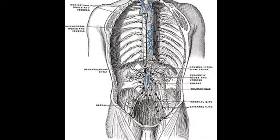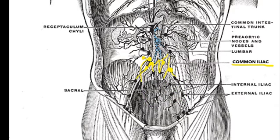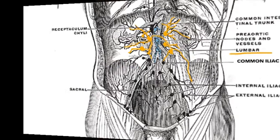Lymph from these three nodes — the internal iliac nodes, the external iliac nodes, and the sacral nodes — all drains into the common iliac nodes, followed by lumbar nodes, and lastly into the lumbar trunks. The lumbar nodes are also known as para-aortic nodes as a result of their lateral placement to the aorta.